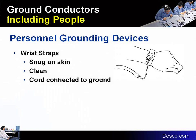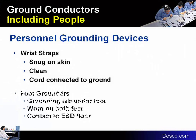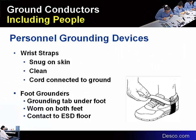The front line of defense is always the personal grounding device — the wrist strap — which should be worn snug on the skin, kept clean, and the cord connected to ground. Foot grounders are an alternate system strapped on the heel of the shoe with a grounding tab under the foot, worn on both feet, but they also need contact with an ESD grounded flooring system — either ESD carpet, ESD tile, ESD paint, or ESD epoxy floor.